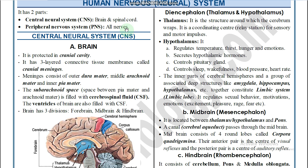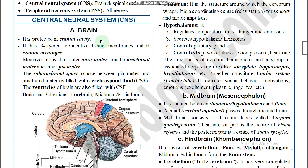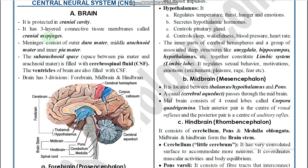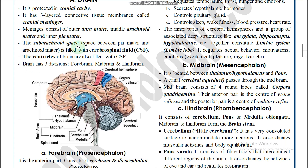The brain is safely protected in the cranial cavity. It is surrounded by three layered connective tissue membranes called meninges, or cranial membranes. From outer to inner, these are: the outermost duramater, the middle arachnoid mater, and the innermost pia mater. The subarachnoid space — between the pia mater and arachnoid — is filled with cerebrospinal fluid (CSF).